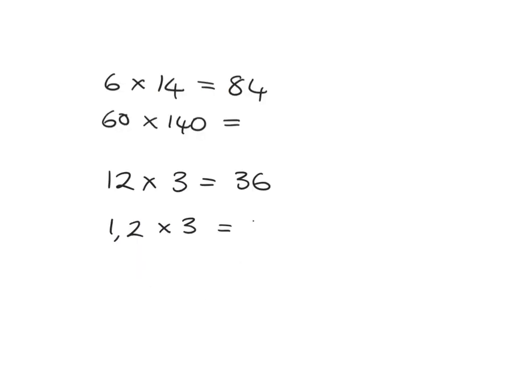So two quick examples of how this becomes very useful for us, this multiplying by 10 and dividing by 10. If we know that 6 times 14 is 84, how does that help us get 60 times 140? Well, immediately we know that 60 is just 6 times 10. 140 is just 14 times 10. So what we've got here is 6 times 14, which gives us the 84. But then we've got to multiply it by 10, multiply it by 10. So our answer is 8,400.